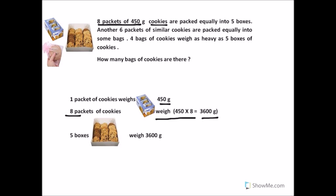Now, going back to the question, 8 packets of 450 grams cookies are packed equally into 5 boxes. So the 5 boxes will weigh altogether 3600 grams.